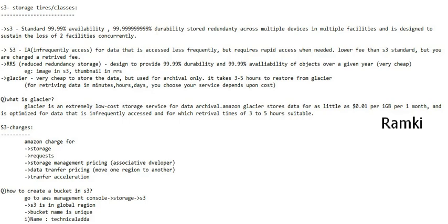In case of 2 availability zones, we have access to 1 availability zone. The data may be available, and the cost is not easy to get access. You should get the data as frequently as needed. We should get the data in S3 standard. S3 IA is for infrequently accessed data — data that is less frequently accessed. We have to get more requests to access it, so we have more cost.